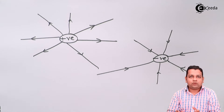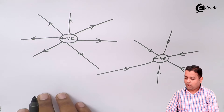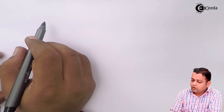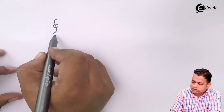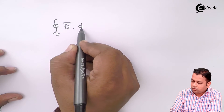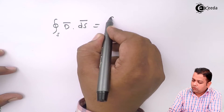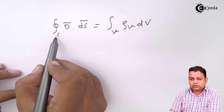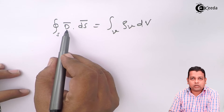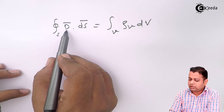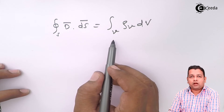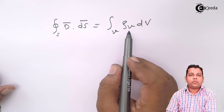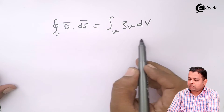According to Gauss's Law in integral form, we have the representation: closed surface integral of D-bar dot dS-bar equals volume integral of rho_v dV. On the left-hand side we have a closed surface integral — a double integral — where D-bar is the electric flux density dot-producted with the differential surface. On the right-hand side we have a triple volume integral of rho_v dV, where rho_v is the volume charge density. This is the integral form representation.